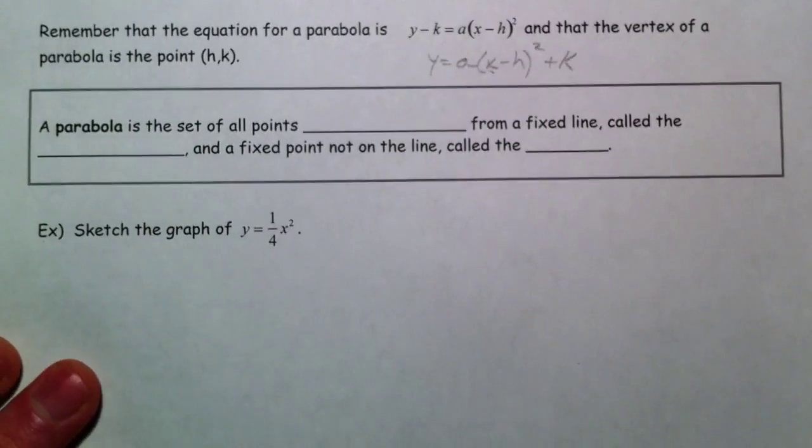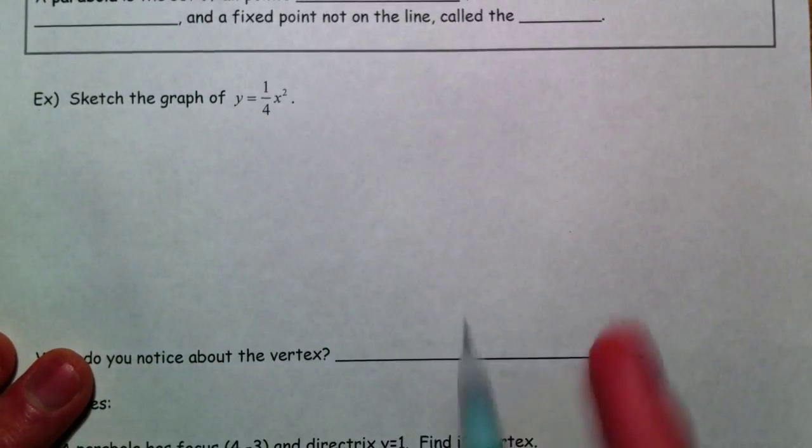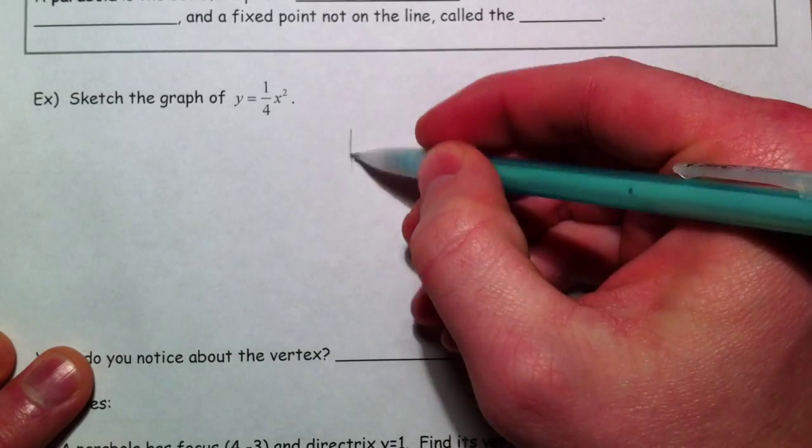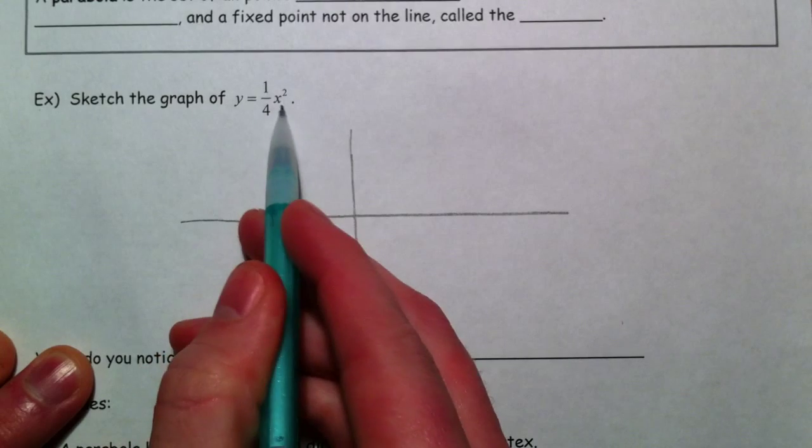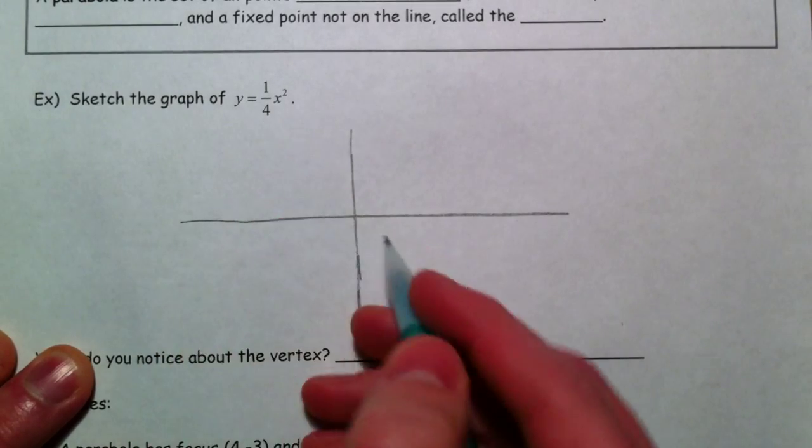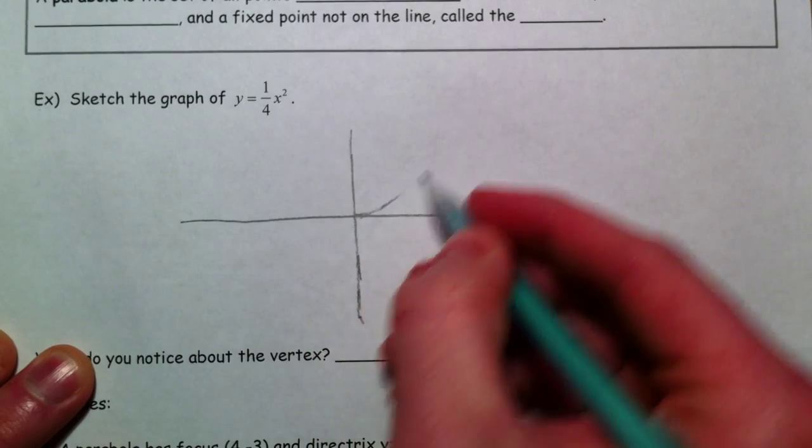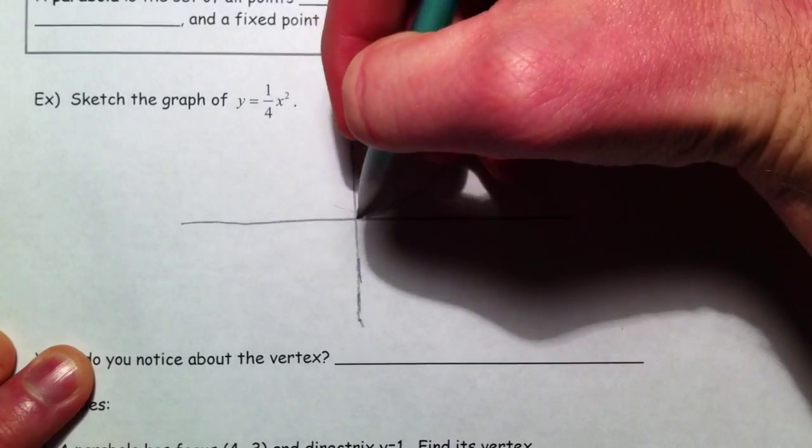So what I want to do, we're going to talk about the geometric definition of the parabola, but I'm going to graph it first. Remember that if it's x squared, parabolas can open up or down. And if it's positive, the parabolas open up.